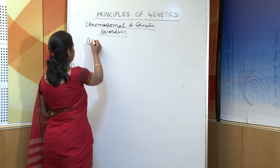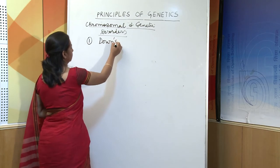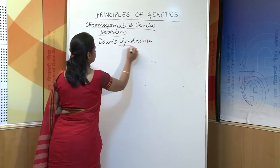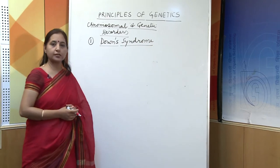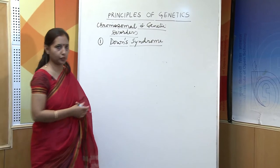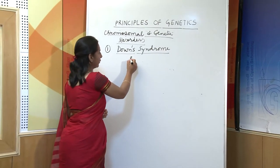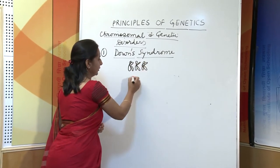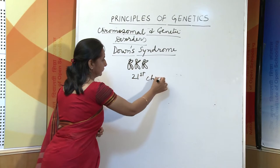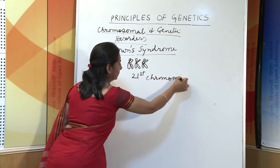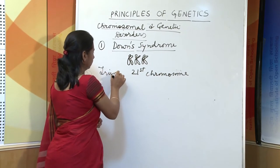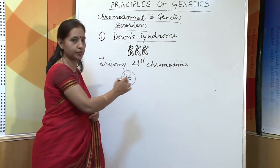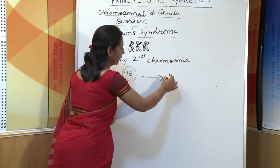The first disorder is Down syndrome. Down syndrome occurs due to trisomy of the 21st pair of chromosomes. That means, instead of a pair, there is an extra chromosome in the 21st chromosome. As a result, instead of the normal number of 46 chromosomes, the number is increased to 47.